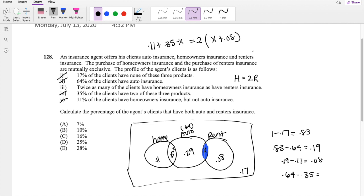So I can distribute the two. So I have, and I can add the 0.11 and 0.35 together. So I have 0.46 minus X equals 2X plus 0.16. I can bring the X on this side, 3X, subtract the 0.16 on the other side, 0.3. So X is equal to 0.3 divided by 3, which is just 0.1.